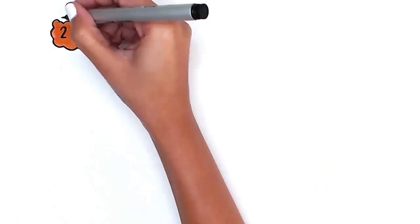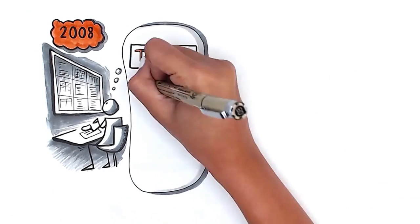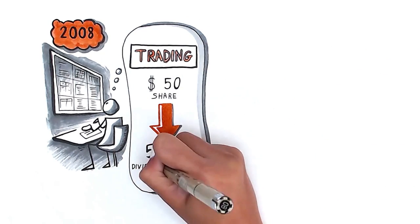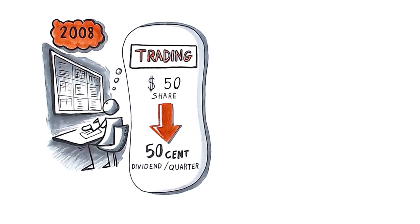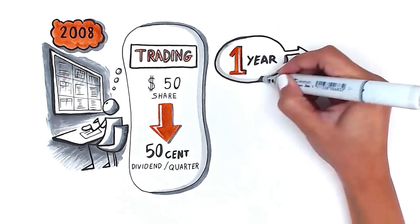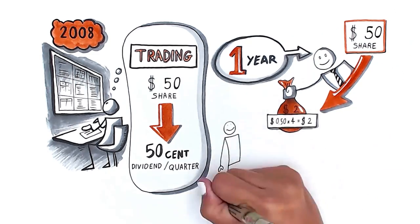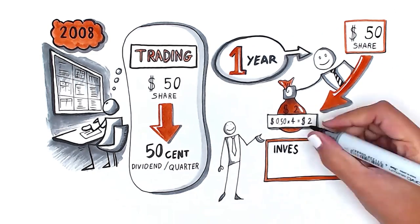In late 2008, this company was trading at about $50 per share and paid a $0.50 dividend per share per quarter. For $50, you could buy $0.50 of cash flow every three months. Annually, your $50 share will provide you $2 of income. This creates an investment yield of 4%.